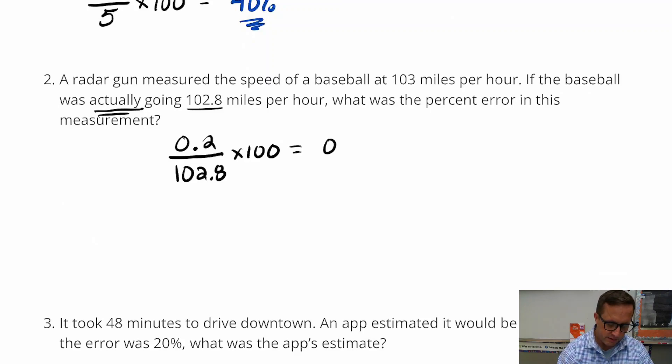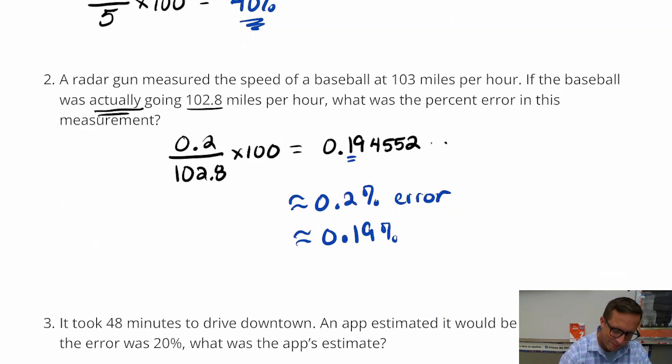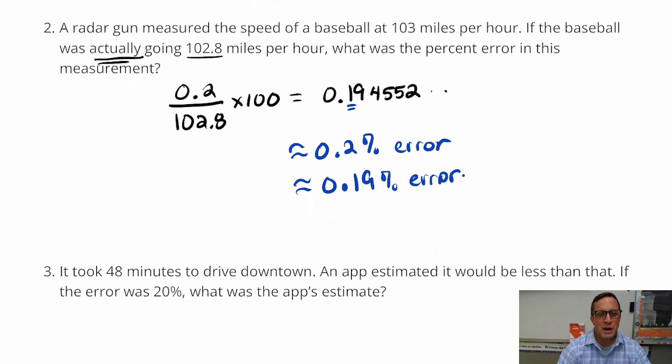I get 0.194552, something. So that's going to be about, if I just round it to one decimal place, it's going to be about 0.2% error. If I use two decimal places, you can put 0.19%. But this doesn't say what we should round it to.